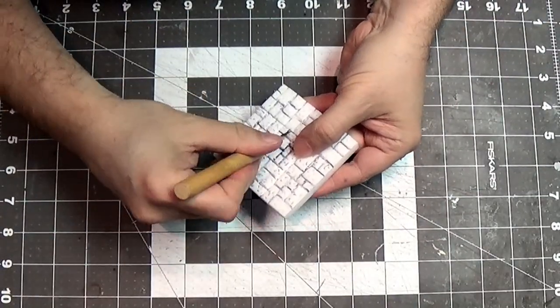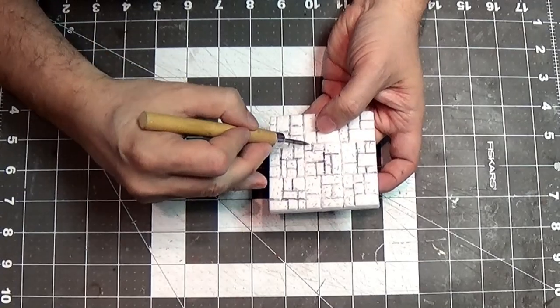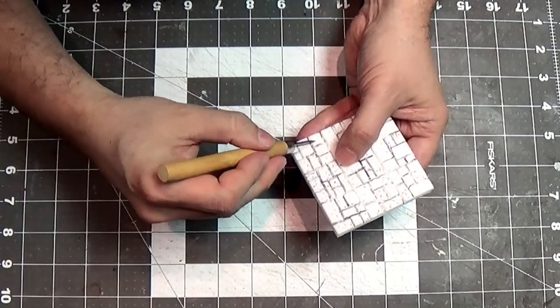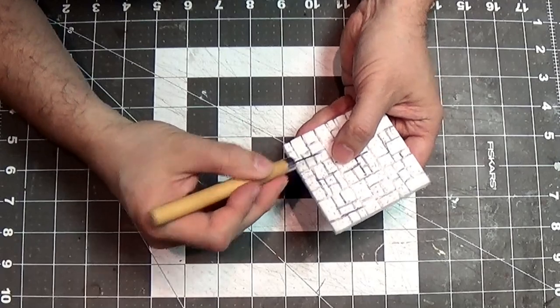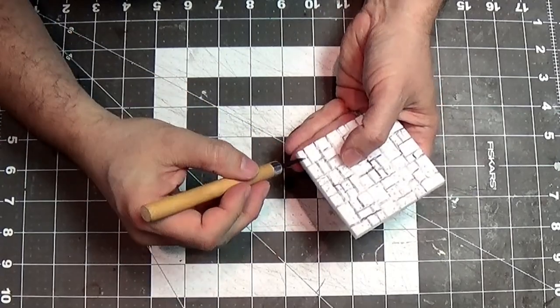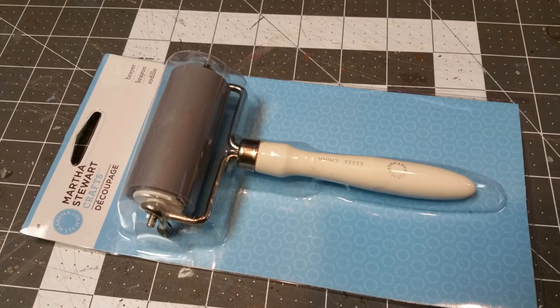Another thing I like to do when it's kind of together is kind of widen those separations because really the difference between a bad stamp and a good stamp is how defined those separations are. How deep and how wide. So the wider and deeper the better.